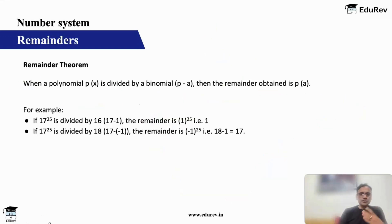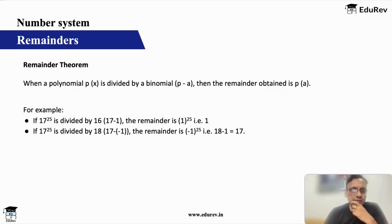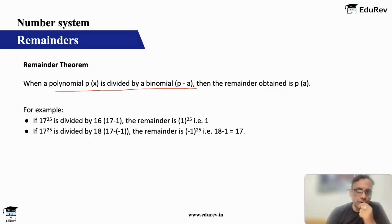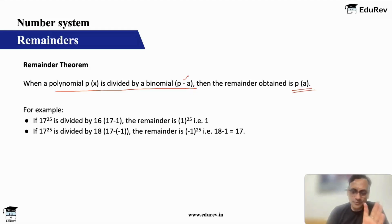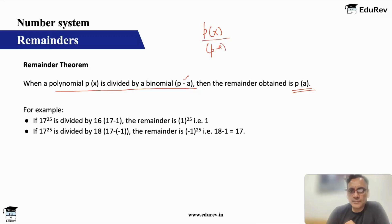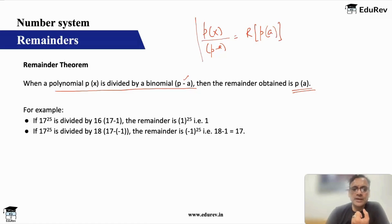The second and one of the most important theorems is the Remainder Theorem. The remainder theorem says: when a polynomial p(x) is divided by a binomial (x minus a), then the remainder obtained is p(a). It might sound complicated, so let me simplify. We have p to the power x divided by (p minus a). When such a thing happens, the remainder is basically p(a) — in that polynomial, you substitute x with a. This is what is your remainder theorem.